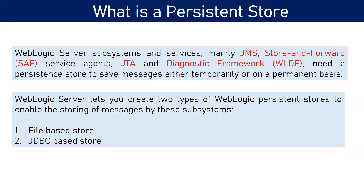When we talk about JMS, if you have some knowledge of JMS, we create different queues and topics. Certain applications send messages to those queues and topics, and some applications can pick up the messages. These queues and topics get targeted to the JMS server, which is a physical repository for all the messages. So messages coming from application one get stored somewhere, and then application two picks up the message.